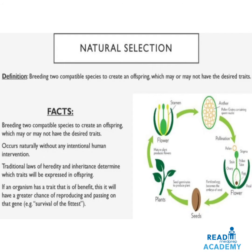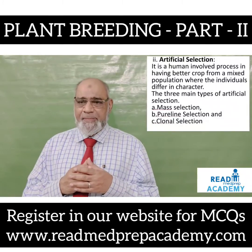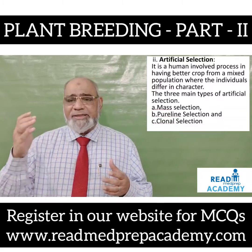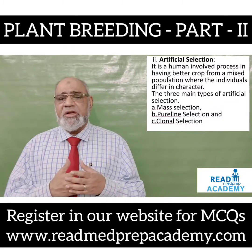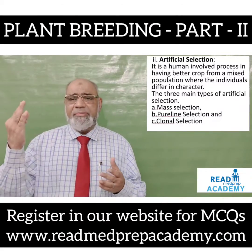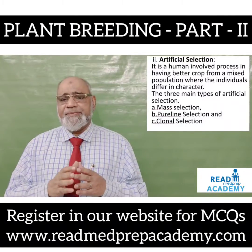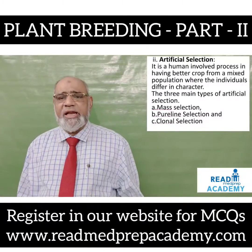If an organism has a trait that is of benefit, it will have a greater chance of reproducing and passing on that gene — for example, survival of the fittest. Artificial selection is a human-involved process of obtaining better crop from a mixed population where individuals differ in character. The three main types of artificial selection are mass selection, pure line selection and clonal selection.